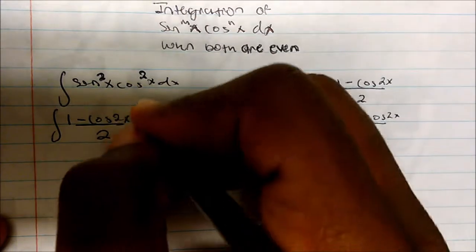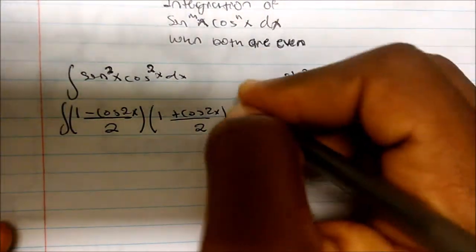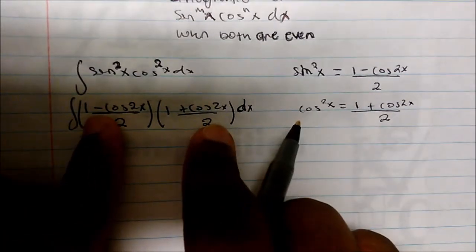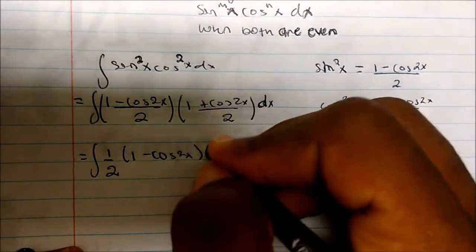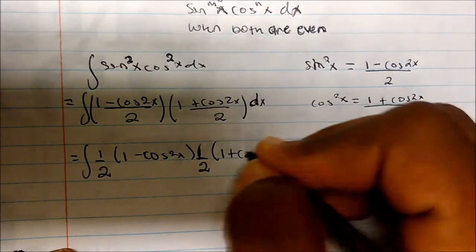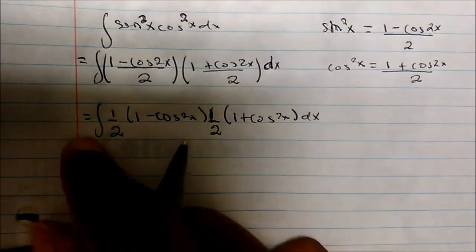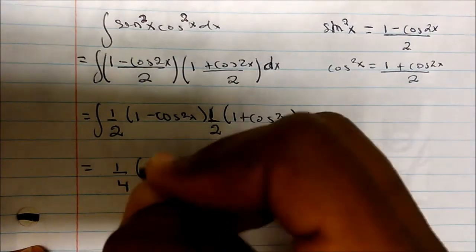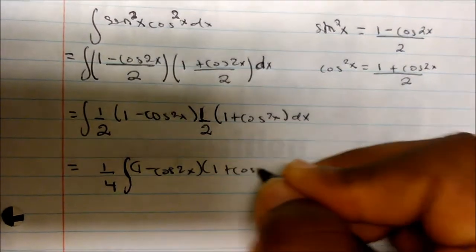Sine squared of x is just (1 minus cosine 2x) divided by 2, and that's being multiplied by (1 plus cosine of 2x) divided by 2 dx. So this is equal to 1 half times (1 minus cosine of 2x) times 1 half multiplied by (1 plus cosine of 2x) dx. Multiplying the two halves gives a 1 fourth on the front, so this becomes 1 fourth times the integral of (1 minus cosine 2x)(1 plus cosine 2x) dx.